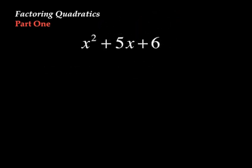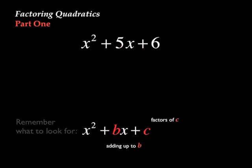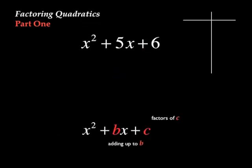Here's our second example. Remember what to look for. We want the factors of the C term that add up to the B term. In this case, the factors of C, or 6, adding up to B, 5.